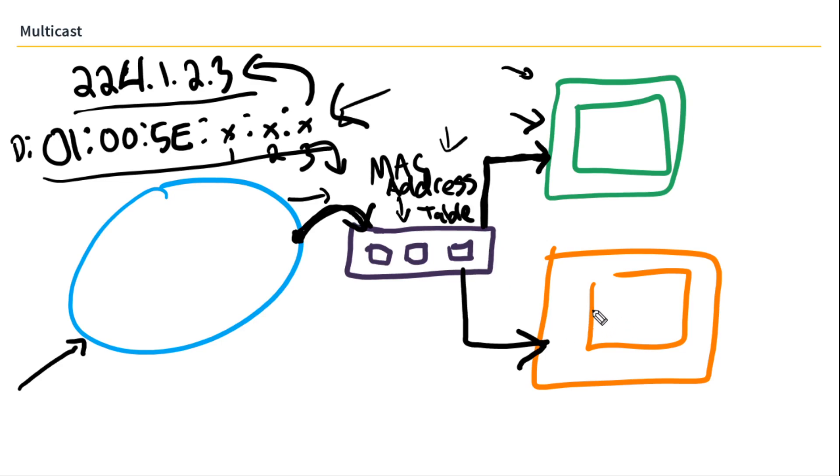And because the orange client isn't listening on that MAC address, it will be dropped at the NIC. That still creates a lot of unnecessary choke in this segment right here. So what the switch could enable is something called IGMP snooping.